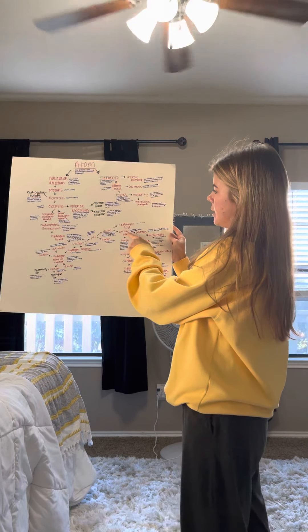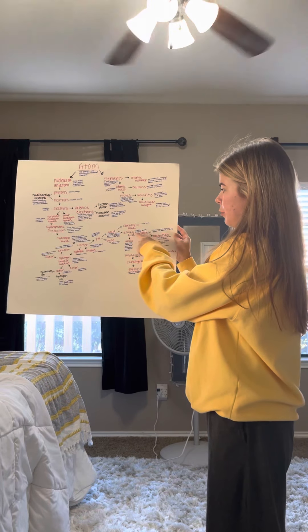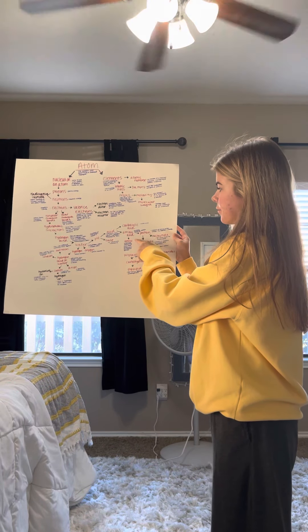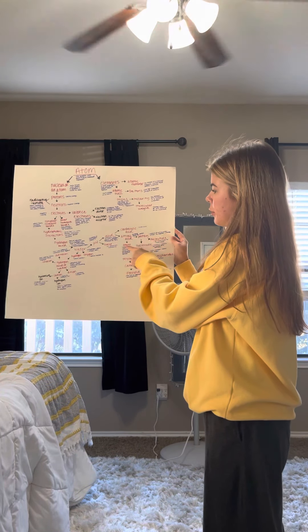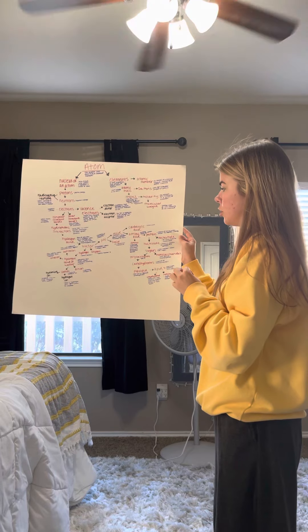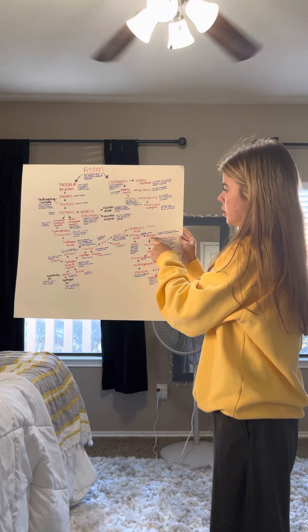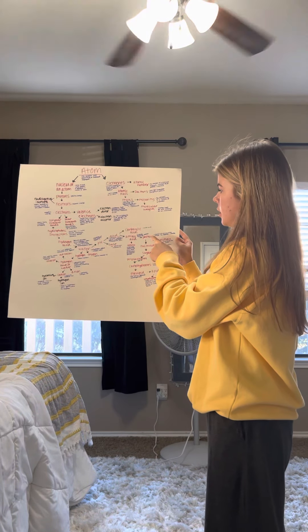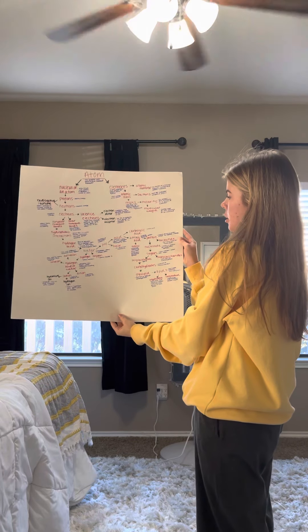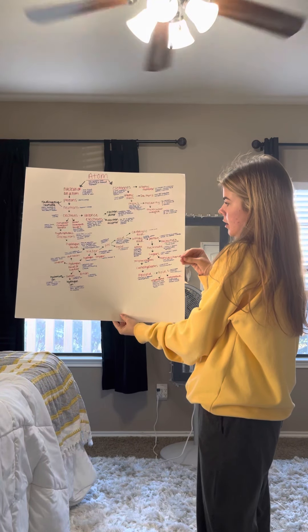We go down to amino acid, which are the building blocks for protein. Before we go on to protein, we'll go down to amino, which are the compounds containing amino and carboxylate functional groups. Going back up to amino acids and going to the right for proteins, we have polymers of amino acids that are joined by a peptide link.